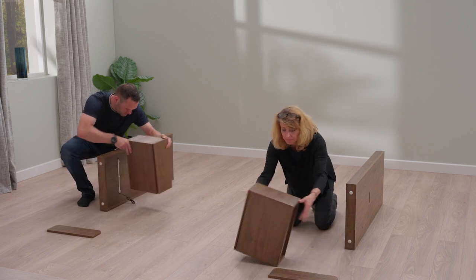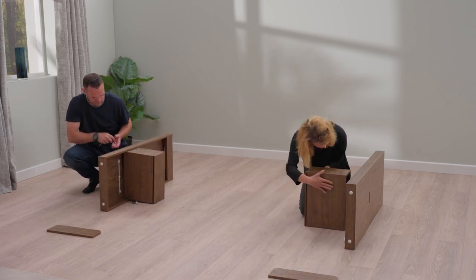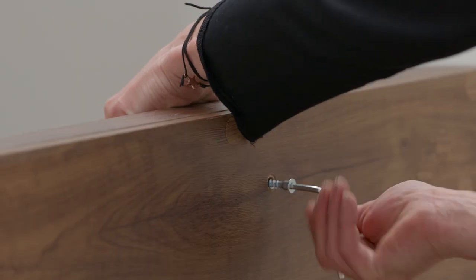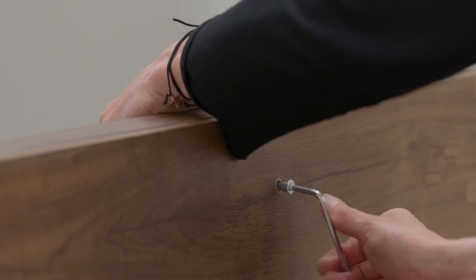Identify which wing is right and which is left and place each one on its side with the cable at the bottom. Fit the draw unit to the back panel using the carcass screws, ensuring it is the right way up before doing so.